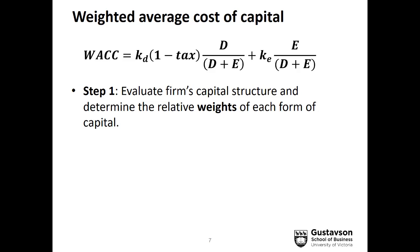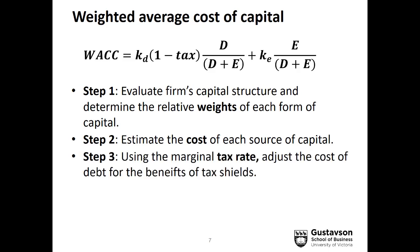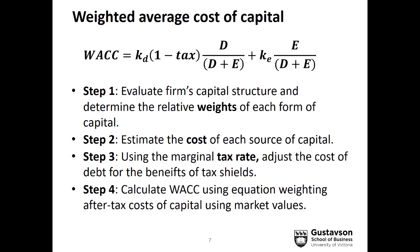We need to know the relative amounts of each using their market values. Step two: estimate the cost of each source of capital — meaning the market rate that investors are expecting to receive for holding those securities. Step three: adjust the cost of debt using the marginal tax rate, which is the rate expected to be paid by the company over the long term in the future, not the historical or effective rate. Step four: simply plug those inputs into the formula and you will get your weighted average cost of capital.